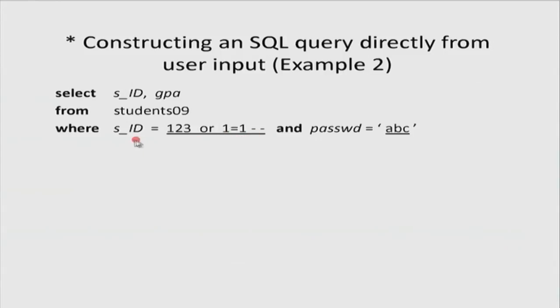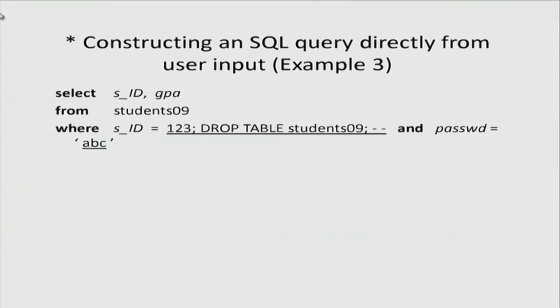Yet another — and much more dangerous — attack vector: type student_id as '123; DROP TABLE students09'. What this does is end the first statement with a semicolon and then execute a DROP TABLE command, which will actually delete the entire table. So SQL injection could not just read your tables, but modify them and worse still delete them. These are some examples, and we will show more in the demo. You will be encouraged to try more of these in the lab.